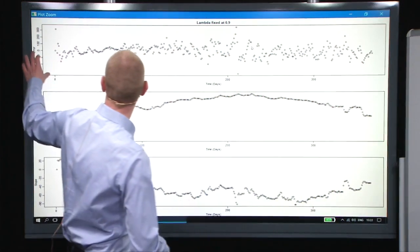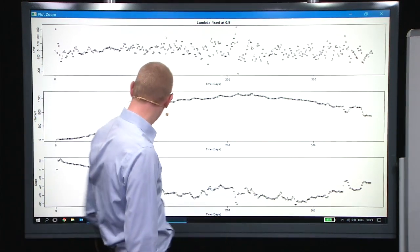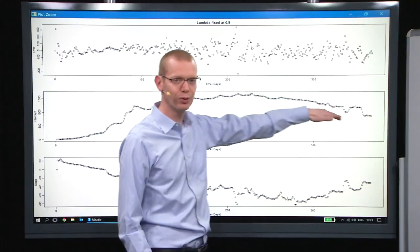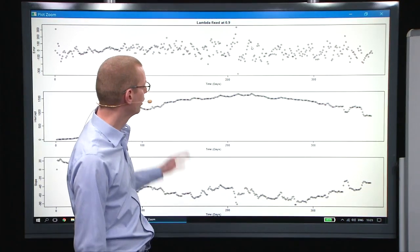So at the top here, we have the one-step prediction errors. Down here, we have the estimate of the intercept, and then we have the estimate of the slope. So here, everything is more smooth than what I showed in the slide before, because here I did it on the daily data.